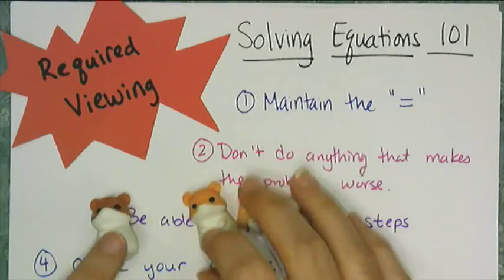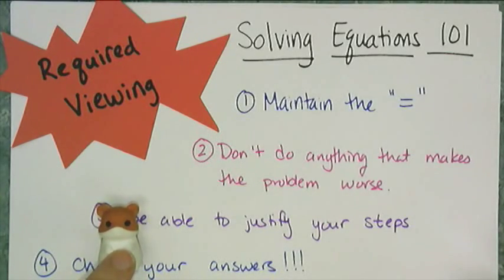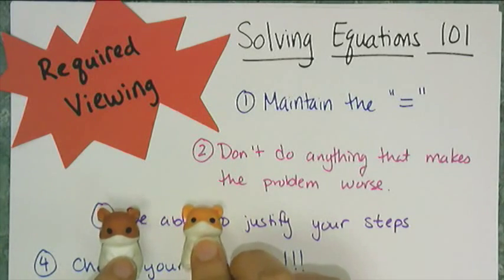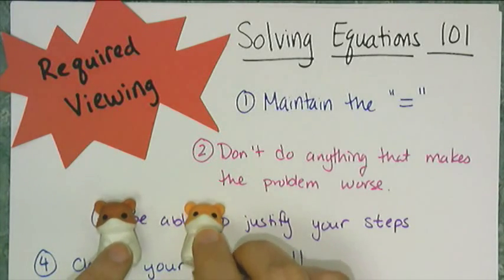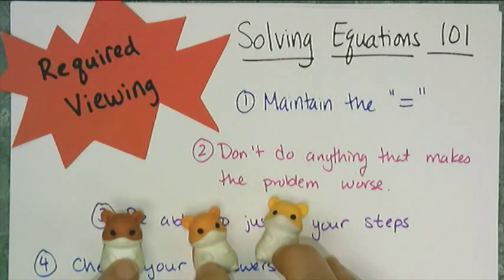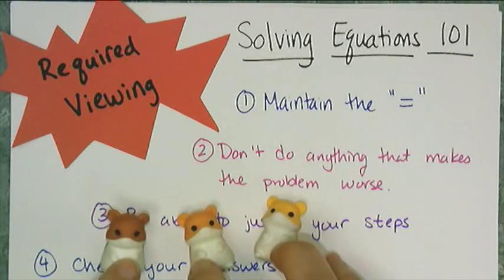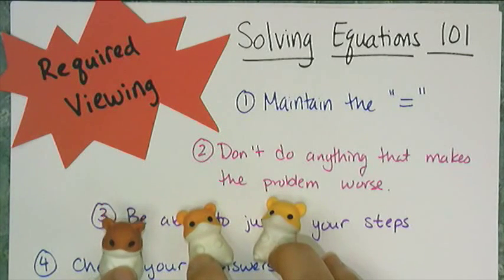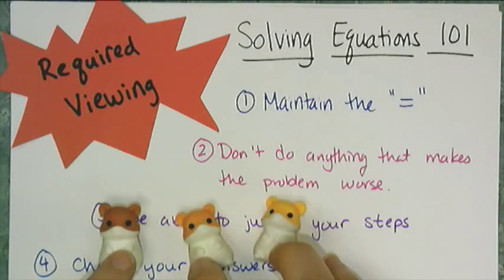If you only see one hamster in the video, that means those problems are really easy. If you see two hamsters appear, that means those problems are more challenging. And oh no, if you see all three hamsters appear, that means that problem that you're about to simplify or solve is going to be very challenging. So look out for Beast, Cheddar, and Buttercup.